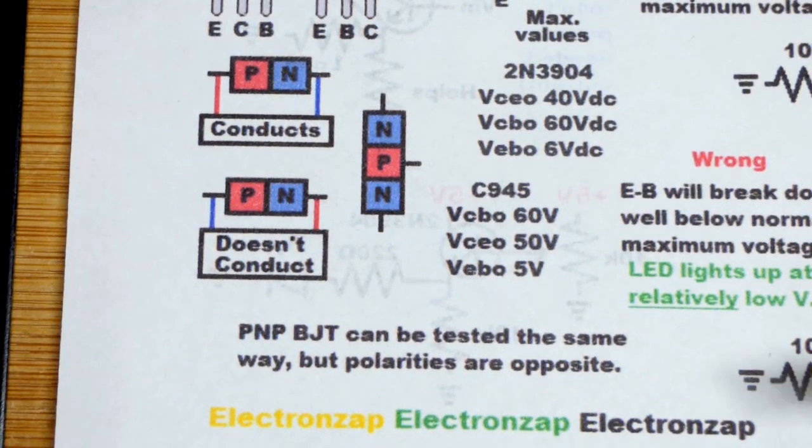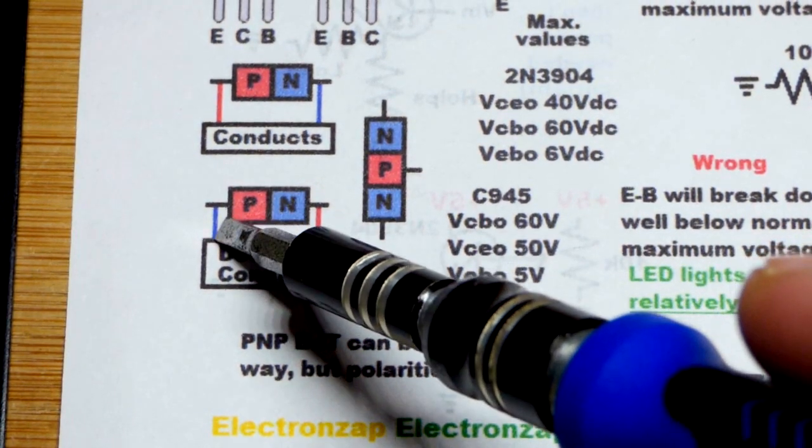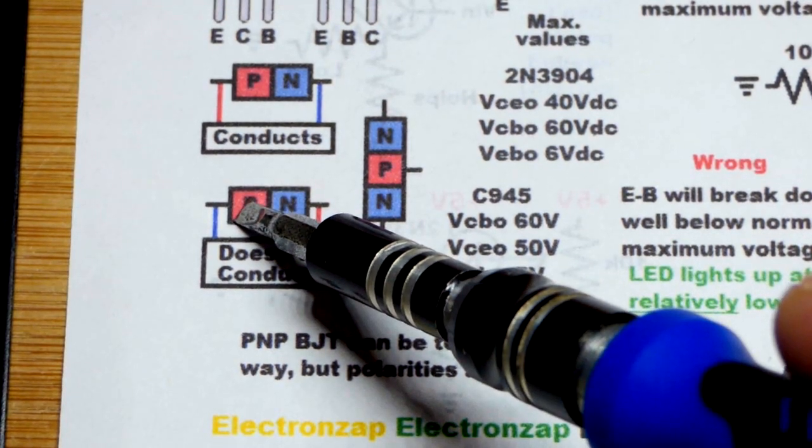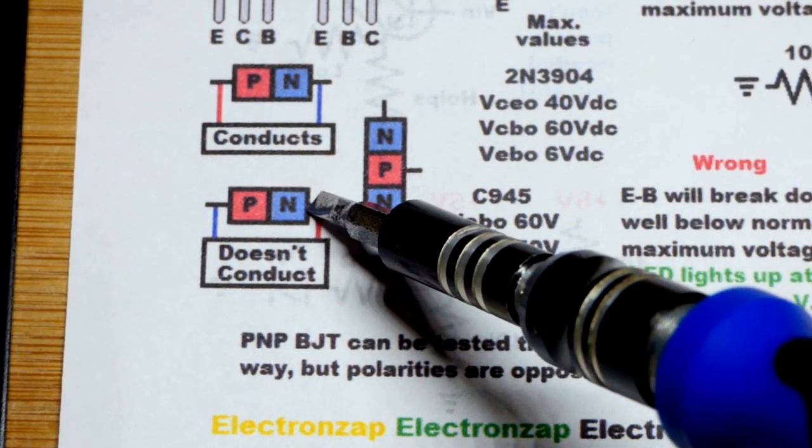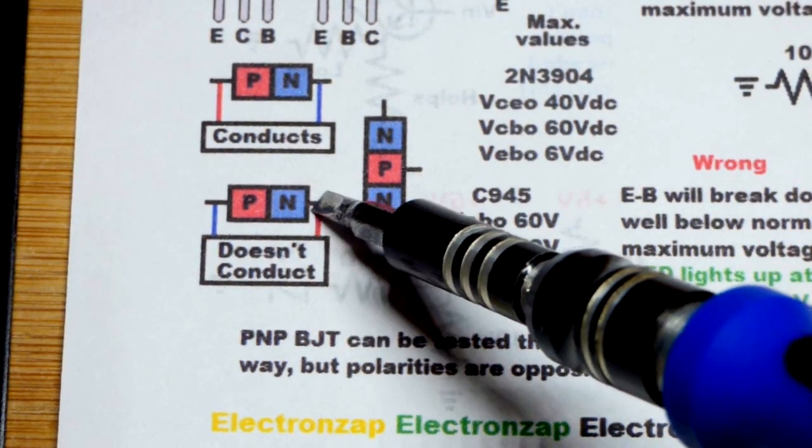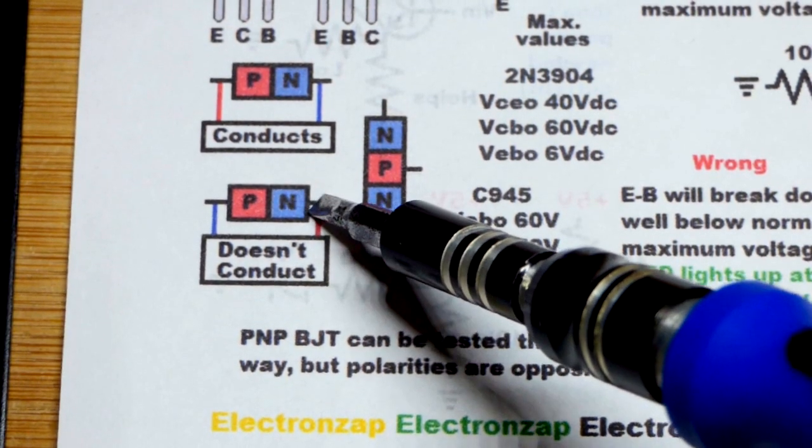If we put the negative probe on here, it's actually a black probe, but we put the negative to the P-type material, the anode, and the more positive to the N-type material there, it will not conduct. That's a reverse bias diode. That's the direction that diodes do not conduct when a voltage is applied across them.